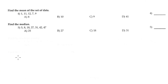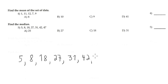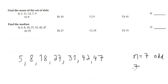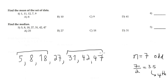Number 5 is the median. We have the data: 5, 8, 18, 27, 31, 42, 47 — ranked in ascending order. We have seven elements. Since it's an odd number, divide 7 by 2 to get 3.5, so we take the 4th position. The 4th position is 27, so the median is 27.